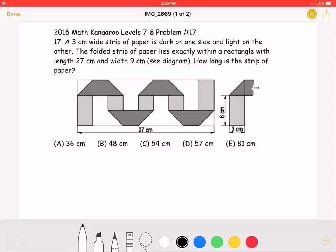A 3 cm wide strip of paper is dark on one side and light on the other. The folded strip of paper lies exactly within a rectangle with length 27 cm and width 9 cm.